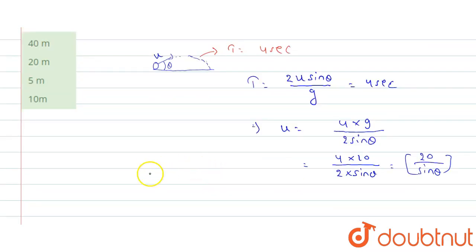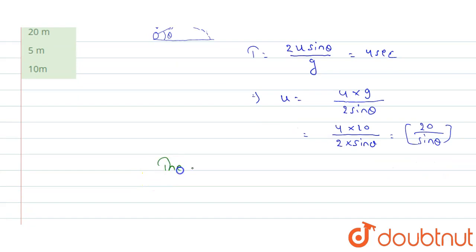Now we know students for a projectile motion, the maximum height h equals u square sin square theta divided by 2 multiplied by g.